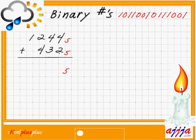Let's add. Four plus two is six — that means one carry over, and one left. Now four plus three plus one is eight, so five goes up, three left. Two plus four plus one is seven, so five goes up, two left. One and one is two. The answer is base number 5: 2 2 3 1 — which is around two thousand something in decimal.